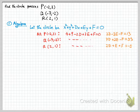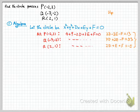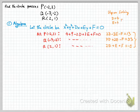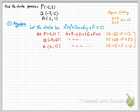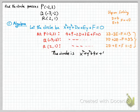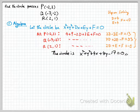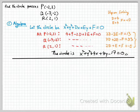Now we have a three-by-three system: three unknowns, three equations. You might wish to pause the video and try to solve it on your own. Upon solving, you get d = 4, e = 4, and f = -17. So the equation of the circle is x² + y² + 4x + 4y - 17 = 0. That is the equation of the circle found entirely by algebra, with no graph needed.